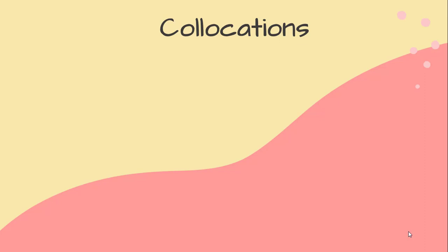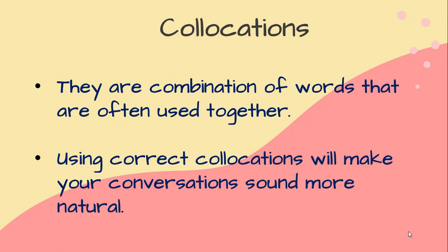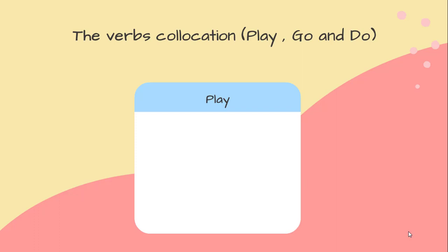Now you can notice the way we combine certain words together — this is called collocations. Collocations are combinations of words that are often used together. Using correct collocations will make your conversations sound more natural. There are certain verbs commonly used with sports, like play, go and do — they are called verb collocations.